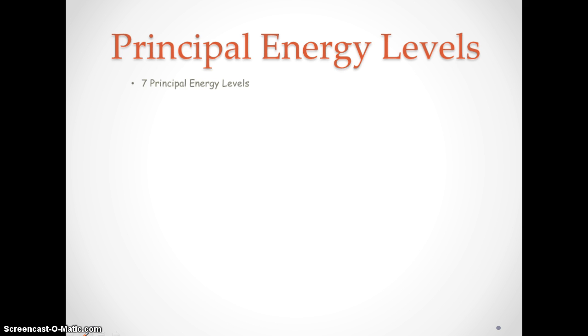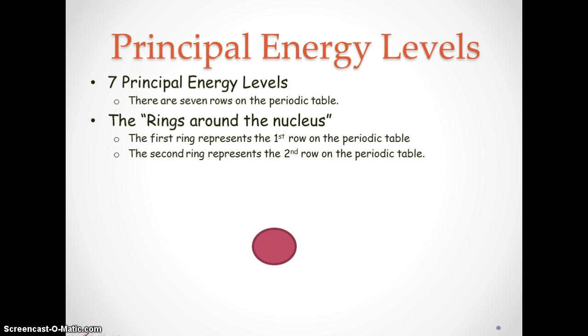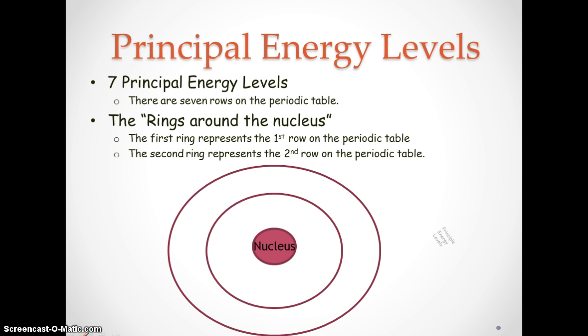There are seven principal energy levels, and coincidentally there are seven rows on the periodic table. So just think of principal energy levels as the rings around the nucleus. The first ring represents the first row on the periodic table. The second ring represents the second row on the periodic table, and so on. In our example, we have our nucleus in the center and then we have that first ring which is known as our principal energy level, and then the outside ring is also known as the principal energy level.